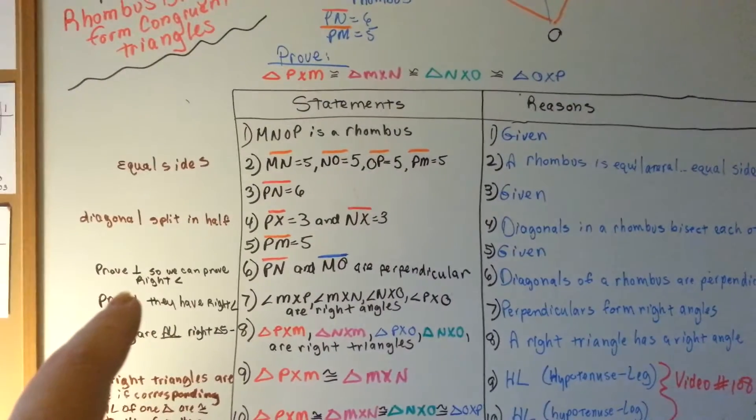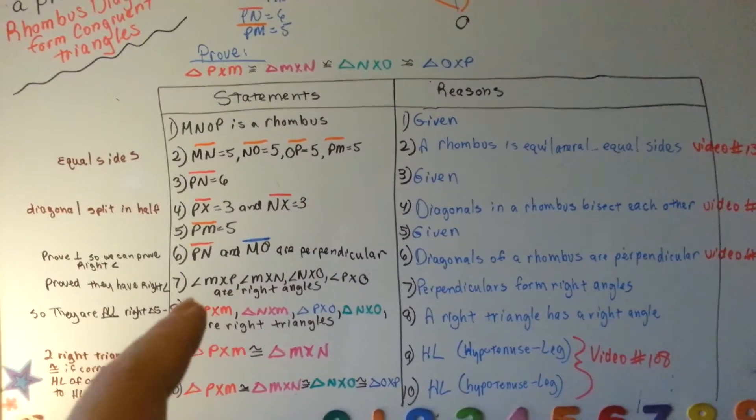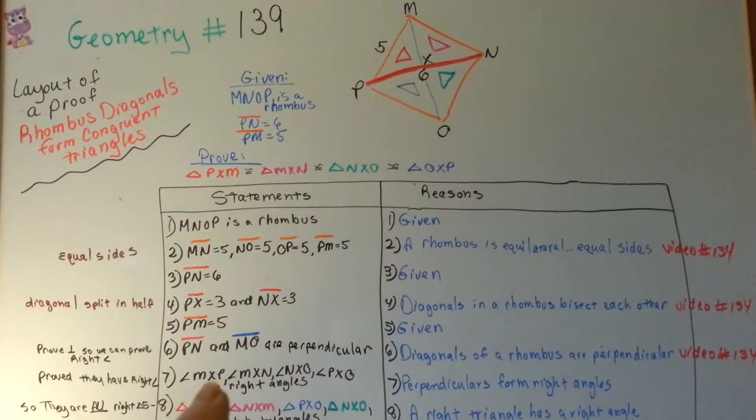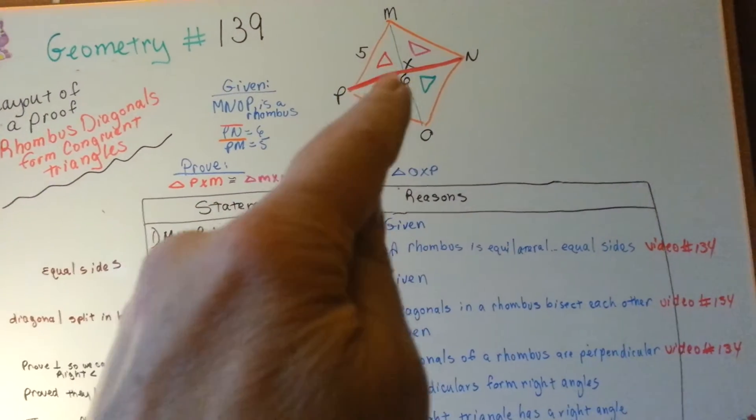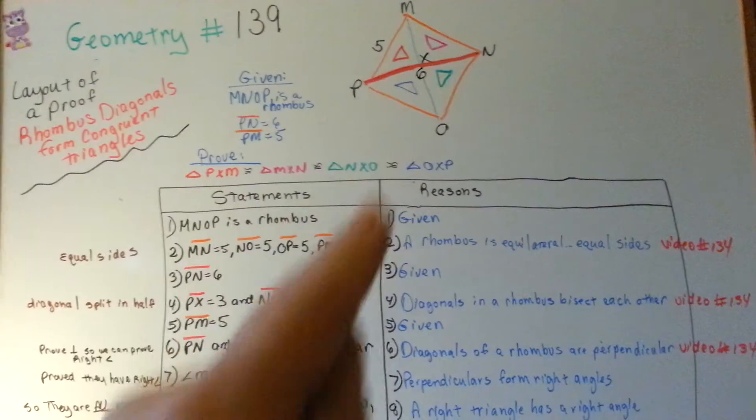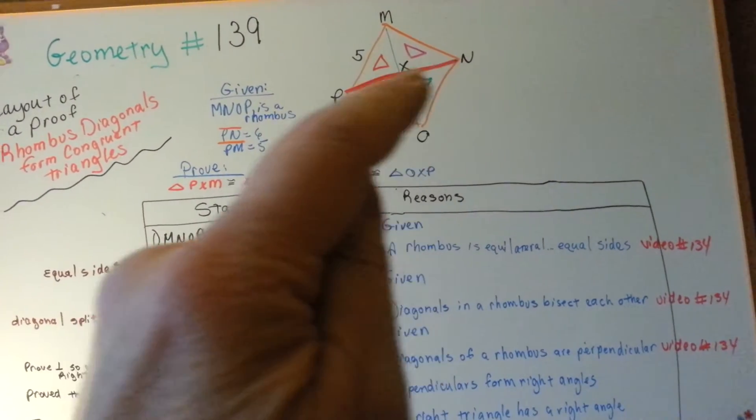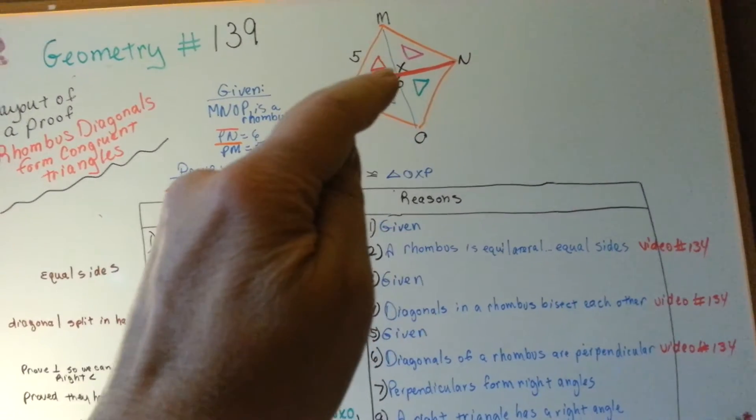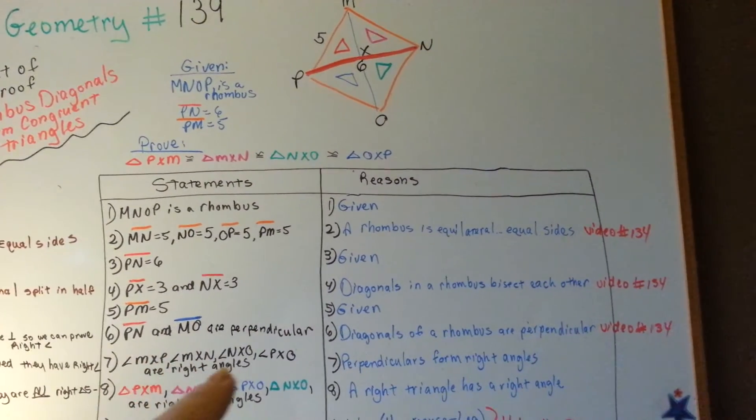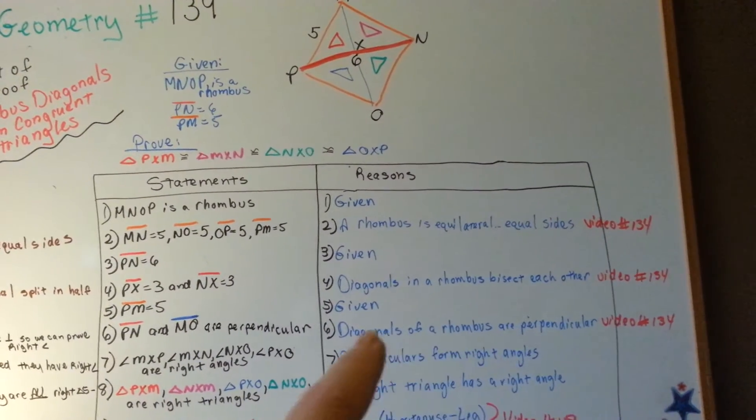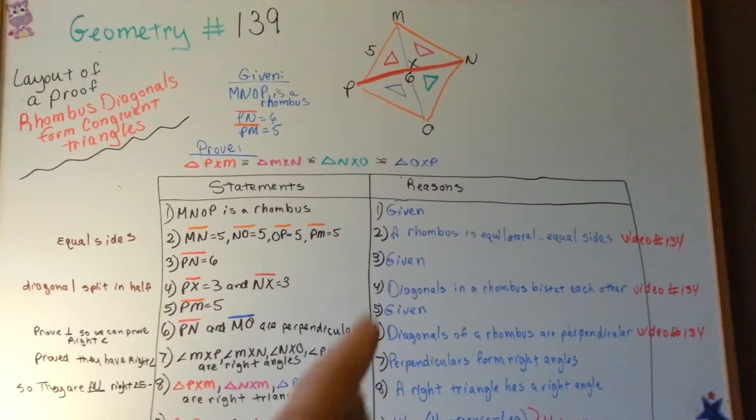So I've proven perpendicular so we can prove right angles. That's the next step. So now I'm going to say that MXP, see everything has an X in the center? That means all these angles with the X as the vertex. All of the angles, this one, this one, this one, and this one. All the ones where X is the vertex. They are all right angles. Perpendiculars form right angles. See? We've proven that they were perpendicular. Now we say that perpendiculars have right angles.